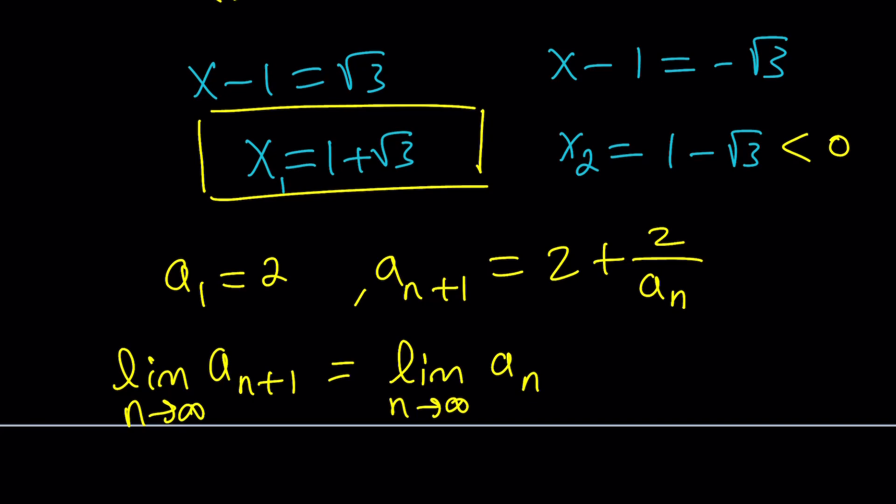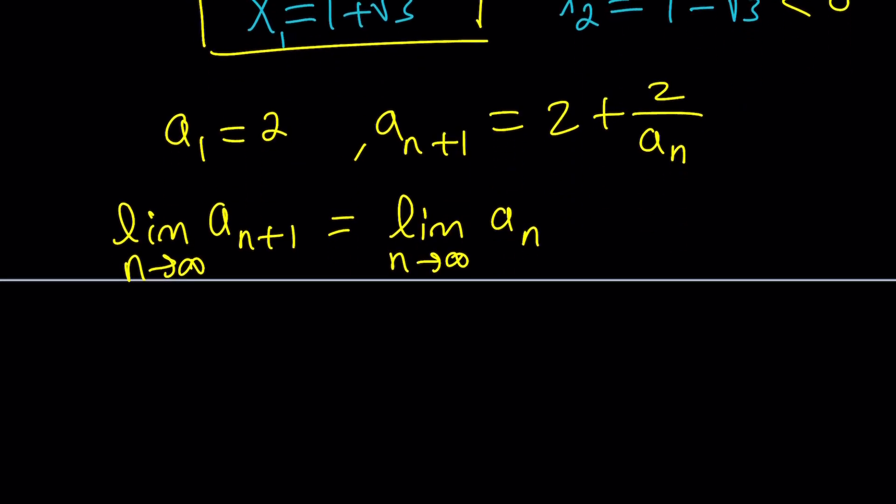Now, using that idea, we can call this limit L. And then when you take limits on both sides, limit as n approaches infinity of a sub n plus 1 equals limit as n approaches infinity of 2 plus 2 over n.